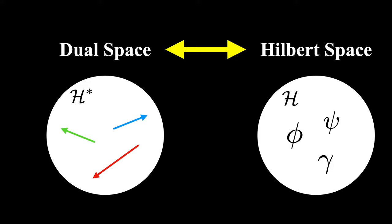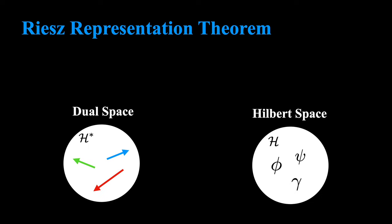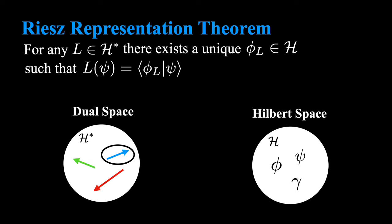This is where the Riesz Representation Theorem becomes very important. It provides an extremely useful way of relating elements of the dual space to elements in the original Hilbert space. The theorem states that if you pick any element in the dual space, and remember everything that lives in this dual space is a linear functional that sends a function in the Hilbert space to a complex number.